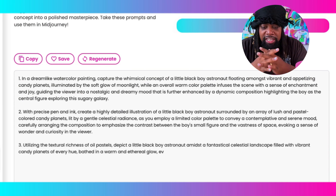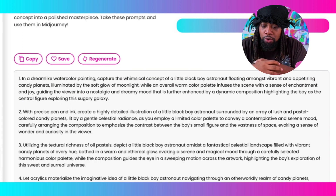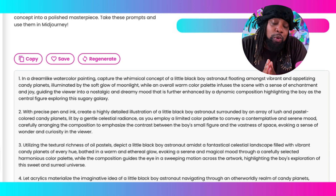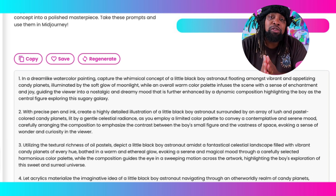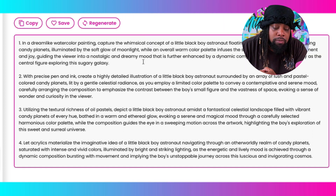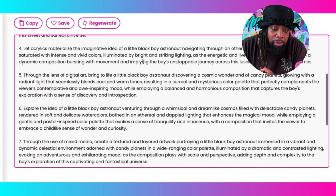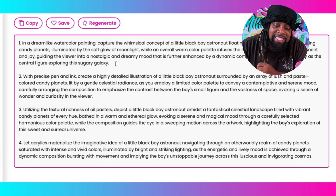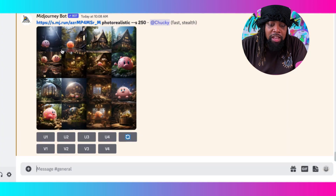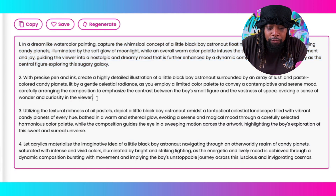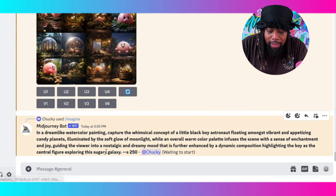This first prompt says: "In a dreamlike watercolor painting, capture a whimsical concept of a little black boy astronaut floating amongst vibrant and appetizing candy planets" — and so forth. I don't even know what "whimsical" means, but to be able to use that word with my design idea — that's amazing. Scrolling down, I can see 10 special prompts that all contain my idea. I'm going to copy each one, bring it over to Discord, do forward slash imagine, and paste it in for every single prompt from Midjourney Muse.